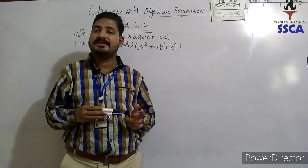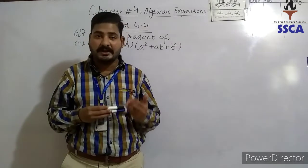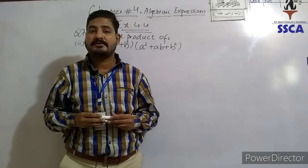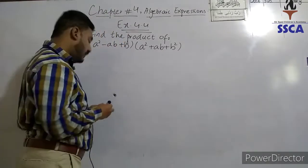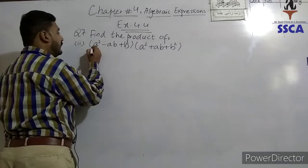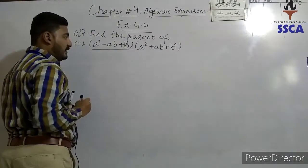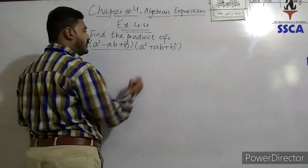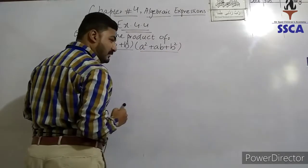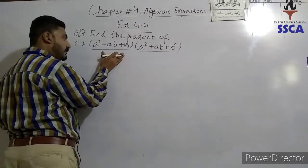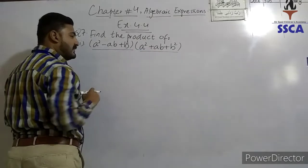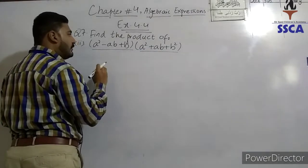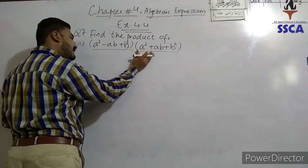Term to term multiplication - we will multiply term to term and follow the laws of exponents. Now we have two algebraic expressions: a square minus ab plus b square, and another algebraic expression is a square plus ab plus b square. This is the first expression, this is the second expression.